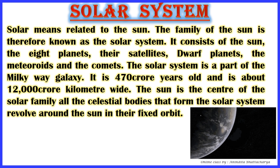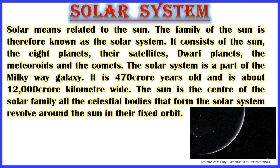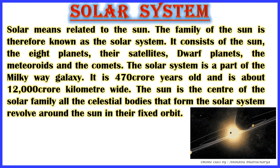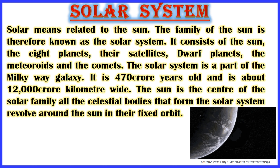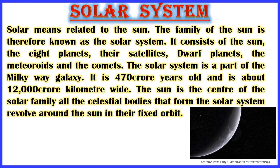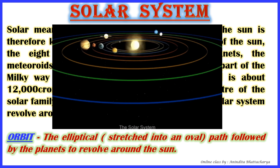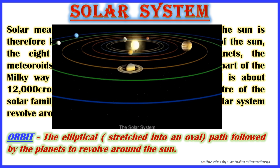The solar system is a part of the Milky Way galaxy, as we discussed in the previous class. It is almost 470 crore years old and about 12,000 crore kilometers wide. The Sun is the center of the solar family, and all celestial bodies in the solar system revolve around the Sun in their fixed orbit. An orbit is the elliptical path followed by the planets to revolve around the Sun. Elliptical means shaped like an oval.